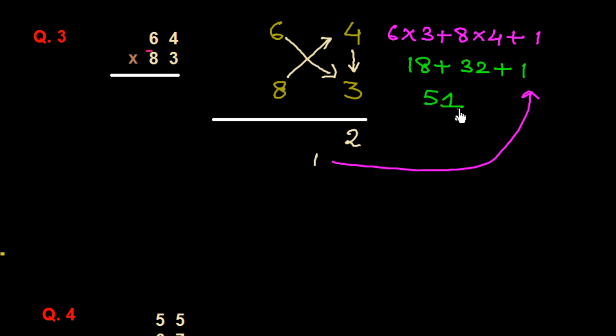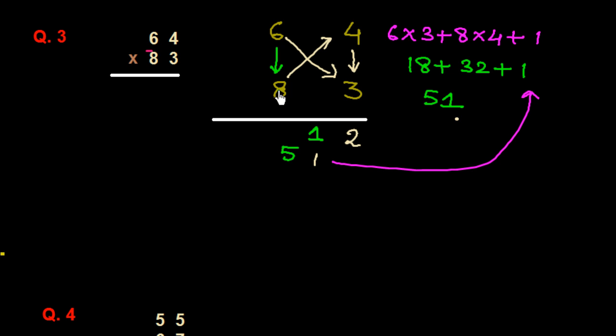It is 51, so we write down 1 and carry 5. Finally, we multiply the tens-place digits vertically: 6 times 8 is 48, plus carry 5 is 53. So the answer is 5312.